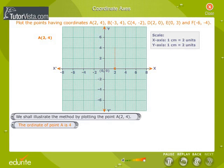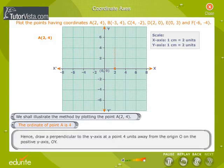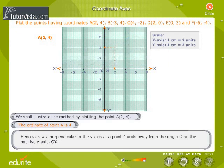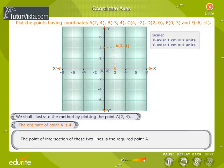The ordinate of point A is 4. Hence, draw a perpendicular to the Y-axis at a point 4 units away from the origin O, on the positive Y-axis OY. The point of intersection of these two lines is the required point A.